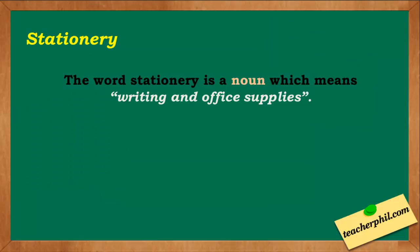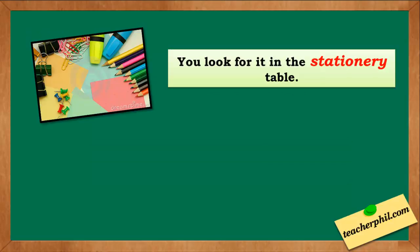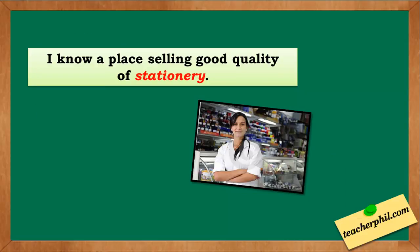The second word is stationery with an E. The word stationery is a noun which means writing and office supplies. Examples: have you seen the stationery I bought yesterday? You'll look for it in the stationery table. Can you tell me where the stationery section is? I know a place selling good quality stationery.